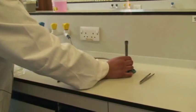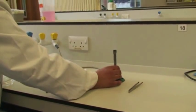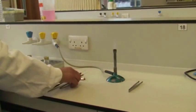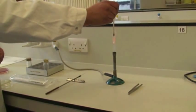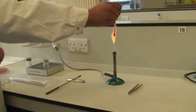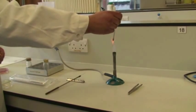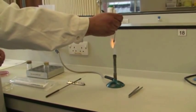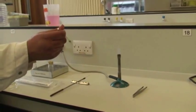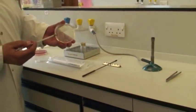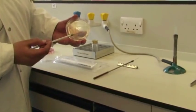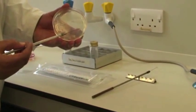I'm going to move the Bunsen flame to its hottest flame. I want to flame this straight wire until it's red hot to sterilize it, get rid of any bacteria on there, give it a few seconds to cool down, and then pick that colony there into the sterile distilled water.